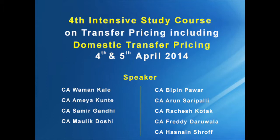The last assertion required in Form 3CEB is that the particulars required to be furnished under Section 92E are given in the annexure, and to the best of my information and according to the explanation given to us, the particulars given in the annexure are true and correct. Note the words used are 'true and correct,' not 'true and fair.' Factual accuracy is most important here — the numbers reported in Form 3CEB must be factually correct.